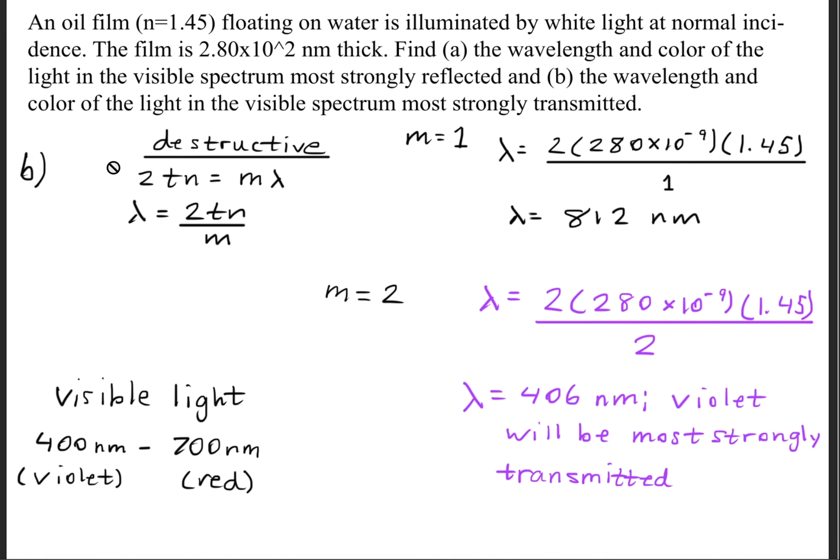It's transmitted because we're using the destructive interference formula. That means we're not going to see this color at all because it's getting absorbed by the film.